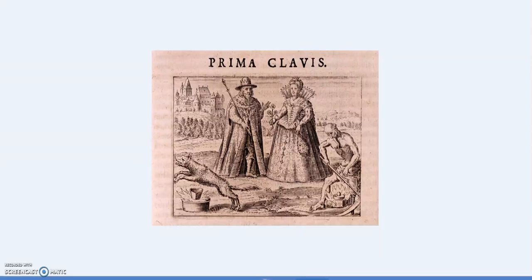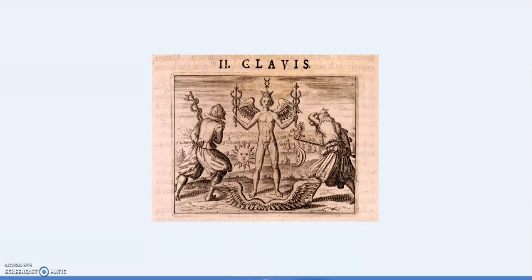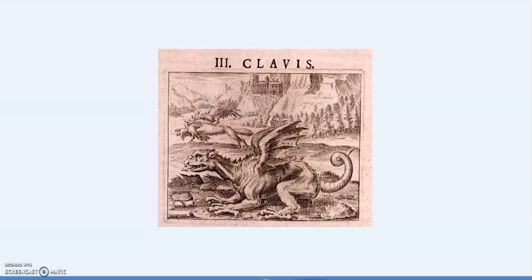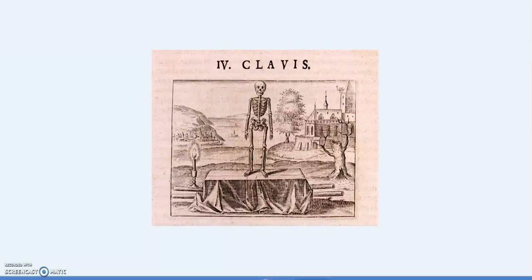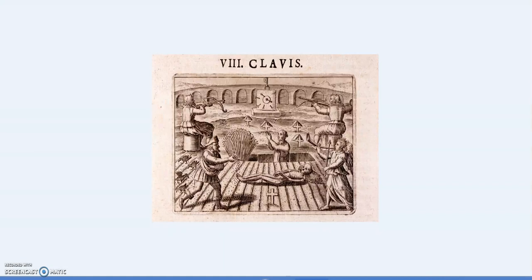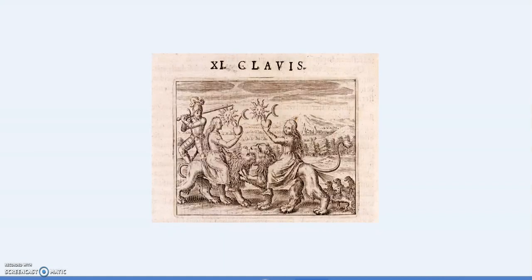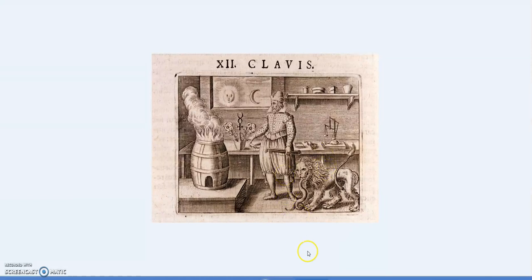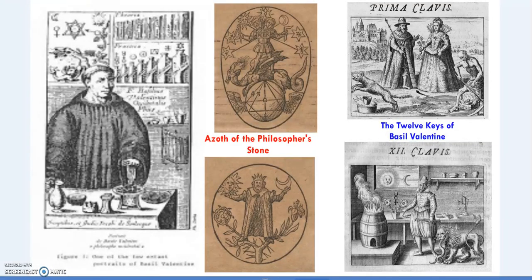In this video I want to recommend a few interesting videos connected to alchemy, and especially the 12 Keys of Basil Valentine. Prima Clavissa is the first key, and these are classical images connected to alchemy. The third key, dragon's blood, fourth, fifth, sixth, seventh, eighth, ninth, tenth, eleventh, and the twelfth key — those are the twelve keys of Basil Valentine.